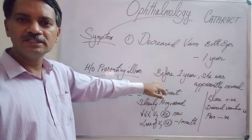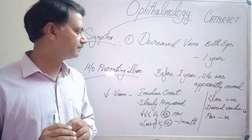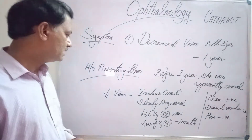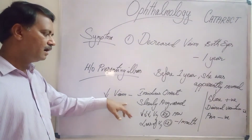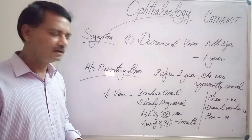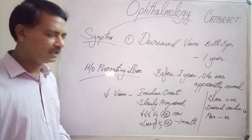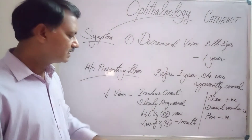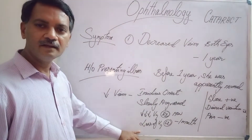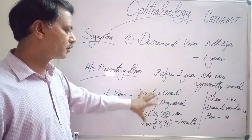Before one year, she was apparently normal — both eyes had normal vision. But around one year back, she developed a decrease in vision in both the eyes, which was insidious in onset, slowly progressed over the period of one year. Now she says the vision in the right eye is very much reduced, and in the left eye she is not able to see anything at all — complete loss of vision in the left eye.